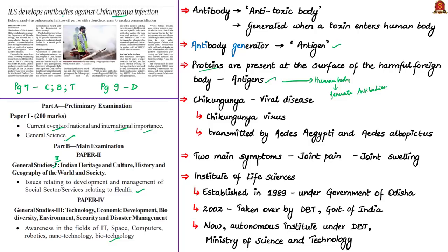One such disease is chikungunya — a viral disease transmitted by infected Aedes aegypti and Aedes albopictus mosquitoes, making it a vector-borne disease. Its two main symptoms are joint pain and joint swelling. The WHO says chikungunya is rarely fatal. An antibody against this chikungunya virus has been developed by the Institute of Life Sciences, an Indian institute. According to the news article, there were no prior antibodies available to combat the chikungunya virus.